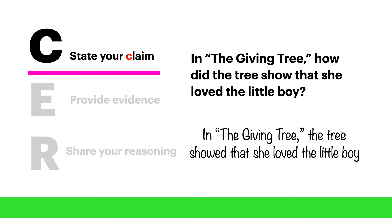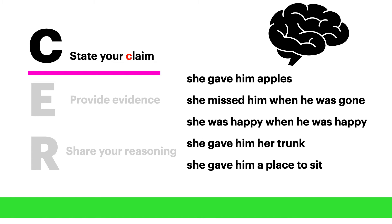So our prompting question was: In The Giving Tree, how did the tree show that she loved the little boy? So we will start out our answer by saying, 'In The Giving Tree, the tree showed that she loved the little boy,' and now we're going to complete our claim. Before I know what my claim is — in other words, how I want to finish answering that sentence — I need to brainstorm some possible ideas.